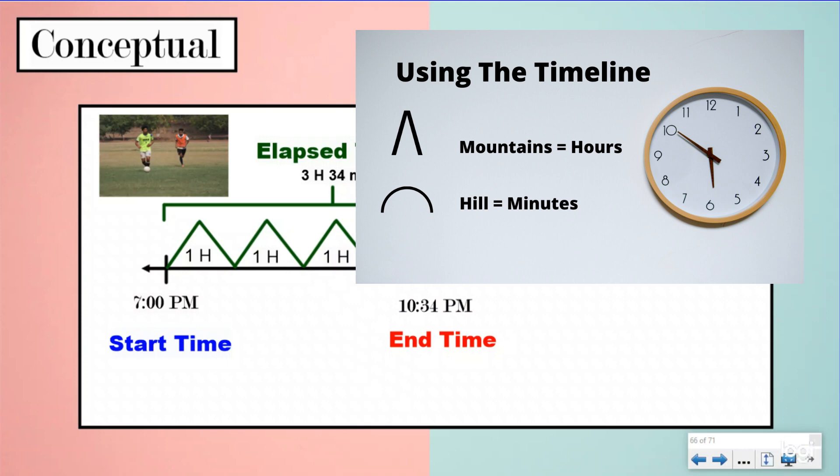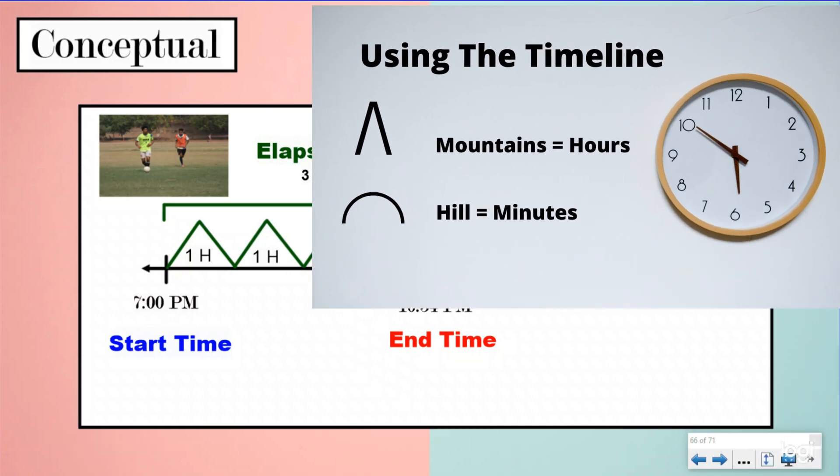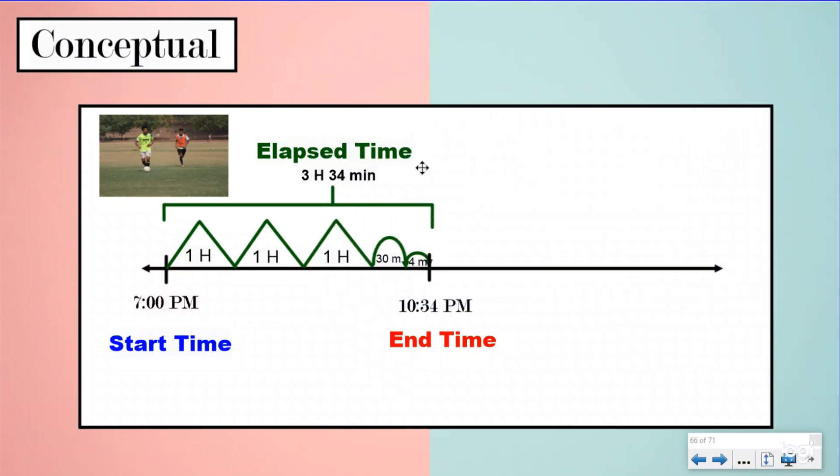It doesn't matter as long as they represent minutes and our mountains are representing our hours. So when we take a look at our story we've been talking about, we know Juan and Alexander left for their game at 7 p.m. It took them one hour to get there. Their game was two hours and 34 minutes long, and it ended at 10:34. So our start time for our event was 7 p.m. The end time for our event was 10:34 p.m.